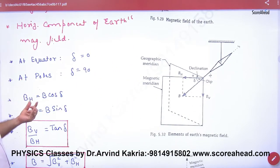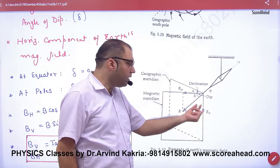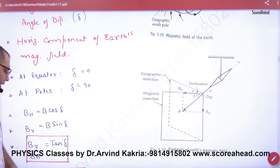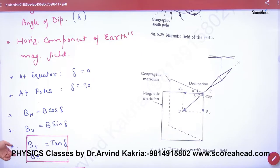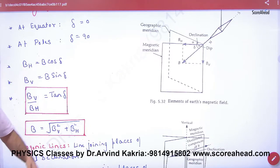The horizontal component: B cos delta. Vertical component: B sin delta. And if we divide both, tan delta equals vertical upon horizontal. The net B value is clear here.